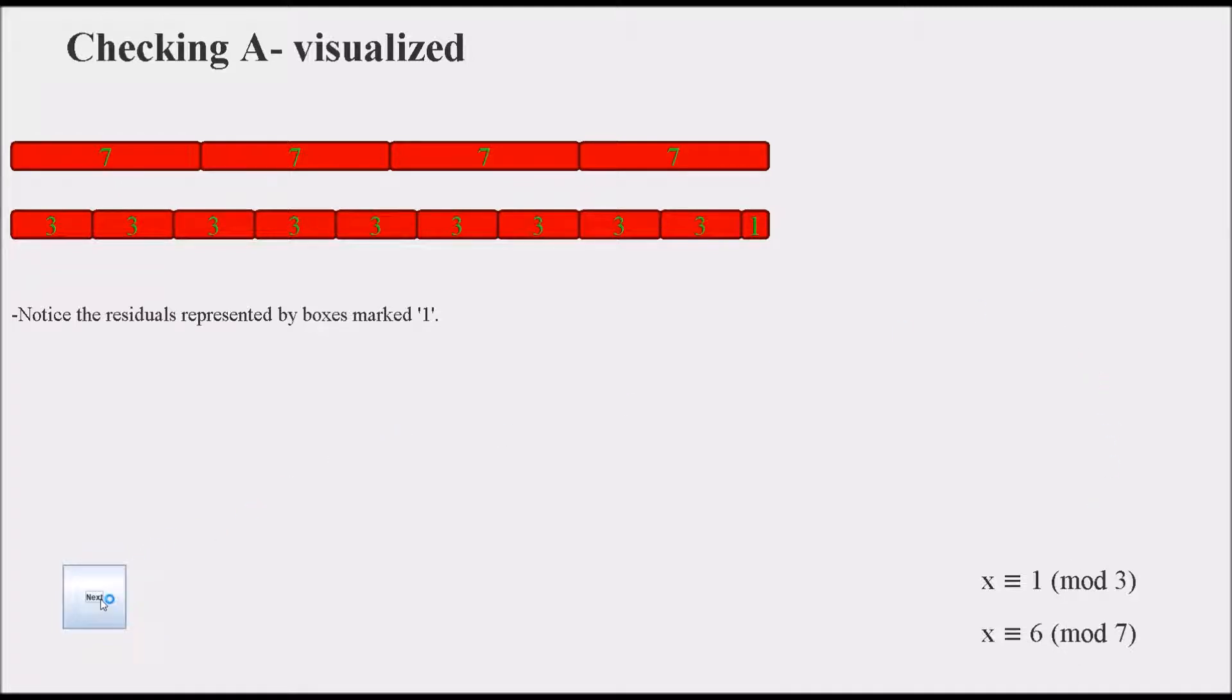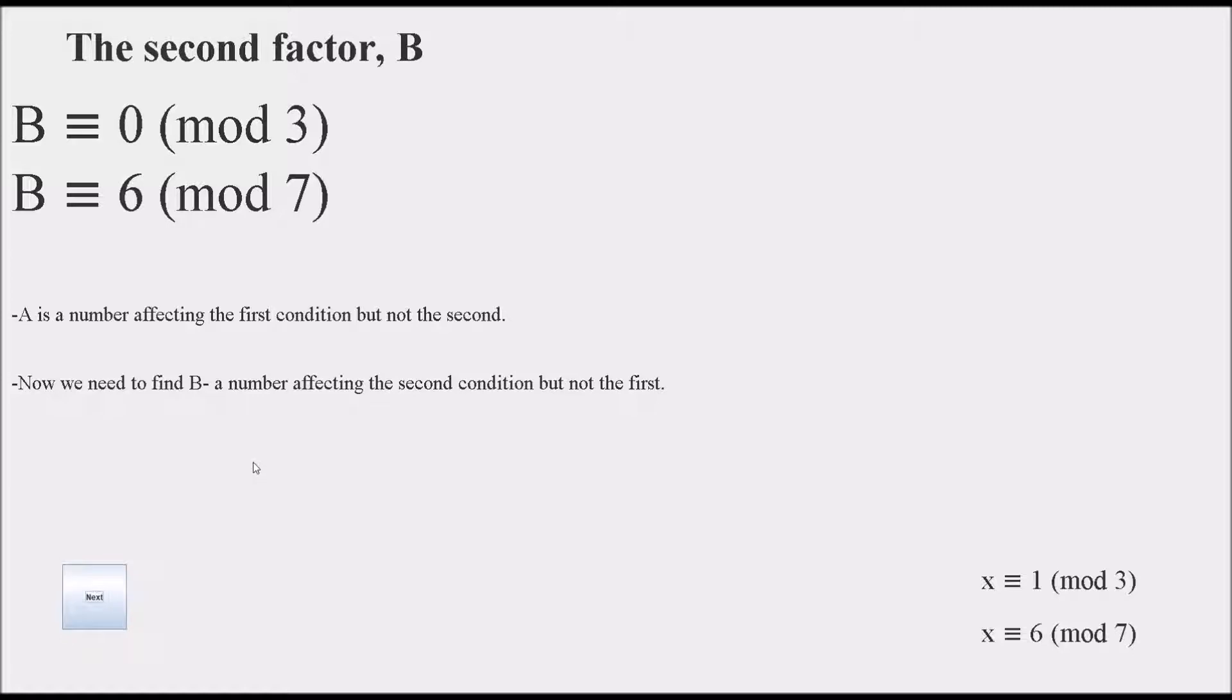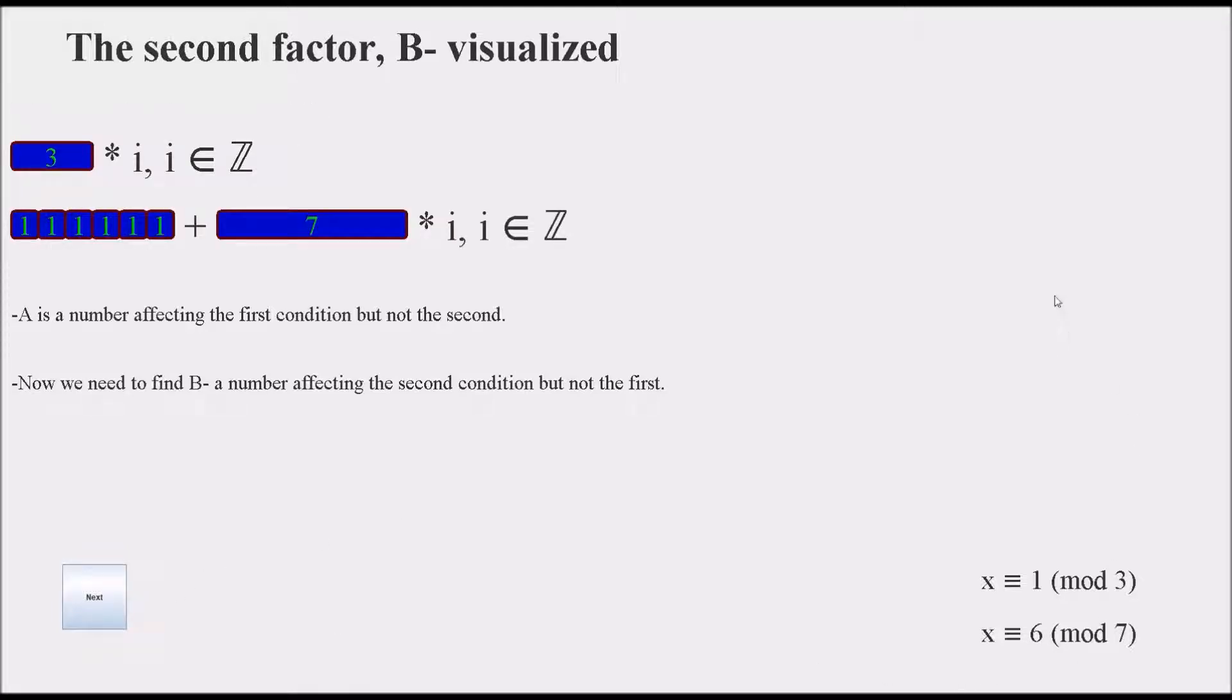The second factor is going to be similar to A, but affect the second equation and not the first. Here is the visualization again, and again you can see that it is the same visualization as with the conditions, but with no residual for mod 3.